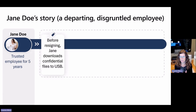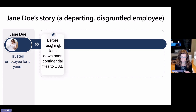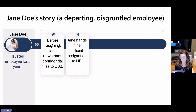In this case, Jane Doe is our fictitious employee, and before resigning, she decides to download some confidential files to USB. She intentionally chooses to do this before resigning with the hope that she will stay under some kind of radar and her activities won't be monitored and noticed. Only then does she hand in her official resignation to HR and start that process.